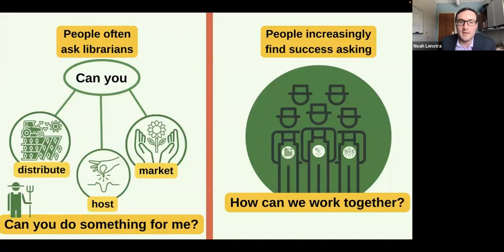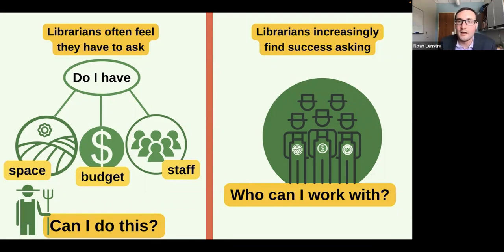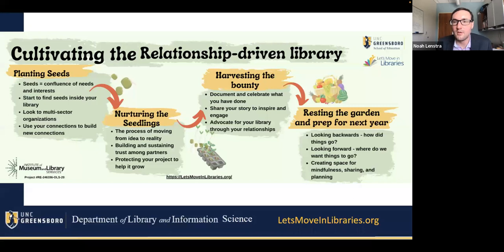What we often find is people ask librarians: can you distribute something for me, can you host an event for me, can you market something for me? What we really want to pivot to is getting partners to ask themselves: how can we work together with the librarians and library workers so that we together can figure out what to do? Similarly, librarians often feel they have to ask: do I have space, budget, or staff to do this new initiative? Instead of asking: who can I work with? Who is out there in my community that could help me get something done, even if I don't have the space, budget, or staff to do it internally? That's really what cultivating the relationship-driven library looks like.